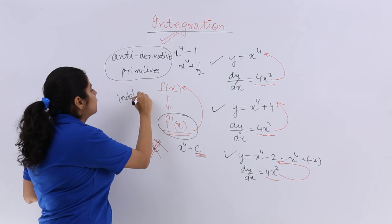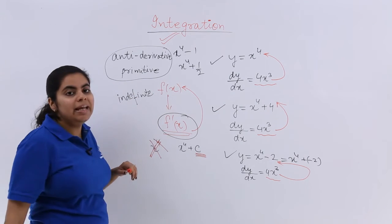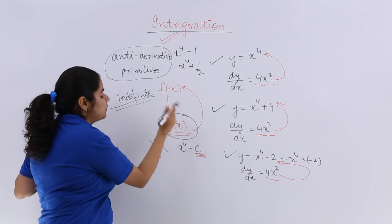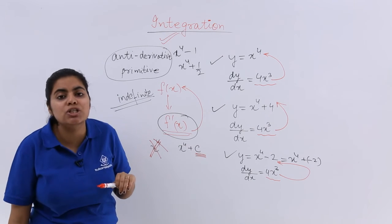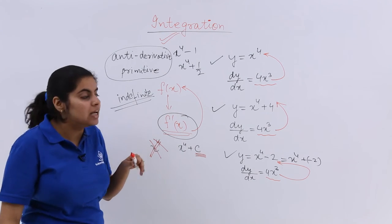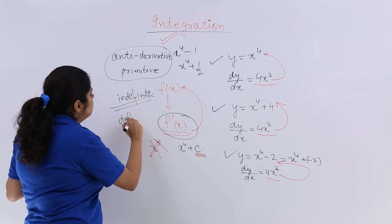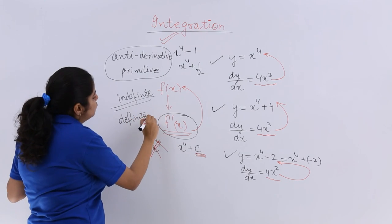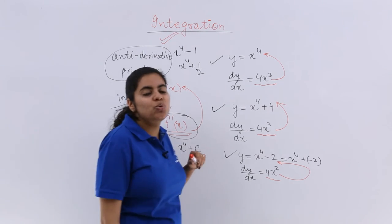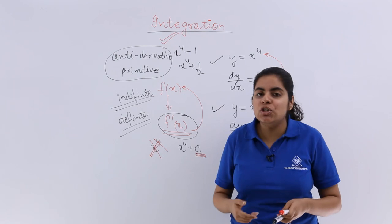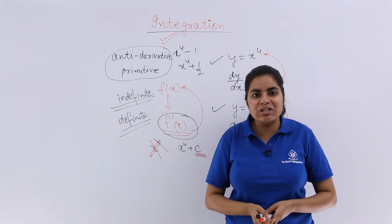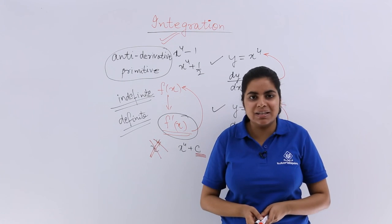One is your indefinite. Indefinite integration would have this arbitrary constant which is known as constant of integration. The other that we are going to study is definite in the later course of the chapter. So stay tuned for more videos on this chapter and let us know integration in much more detail.